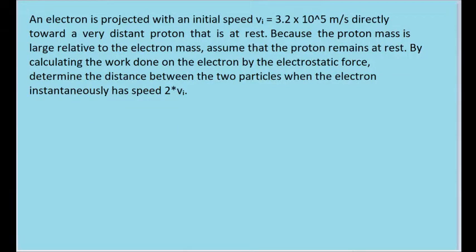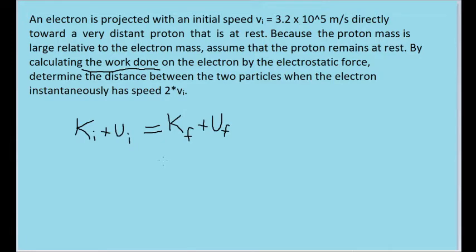Since the problem asks us to find the final distance by calculating the work done, we'll have to use conservation of energy concepts to find the distance. This formula is what the conservation of energy tells us. Since the problem says that the proton is very distant from the electron in our initial conditions, the initial potential energy can be ignored, since the electric potential energy between two charged particles is inversely proportional to the distance between them.